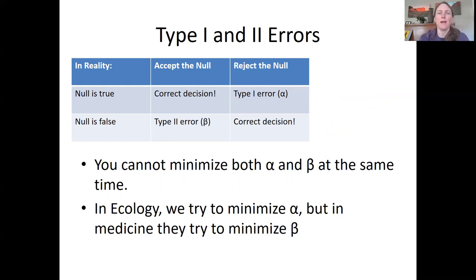So you cannot minimize both alpha and beta at the same time. We would rather be wrong in the way that there is an effect, but we don't see it, then to basically say there is an effect when there isn't one. As ecologists, doctors would rather tell you that you are sick and treat you as if you are than to let you be sick and not know about it and not get treated. So there's some differences between the different types of sciences there.